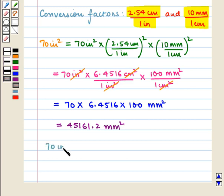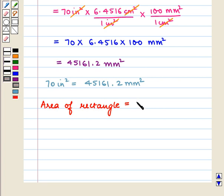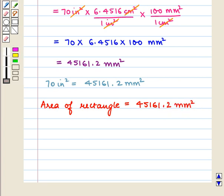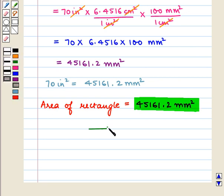So 70 square inches is equal to 45161.2 square millimeters. Therefore, the area of the rectangle is 45161.2 square millimeters, which is the required answer. This completes our session — hope you enjoyed the session.